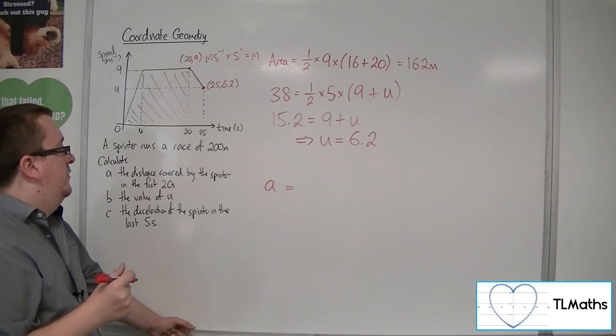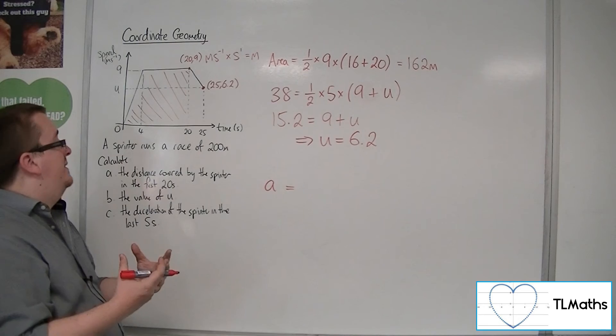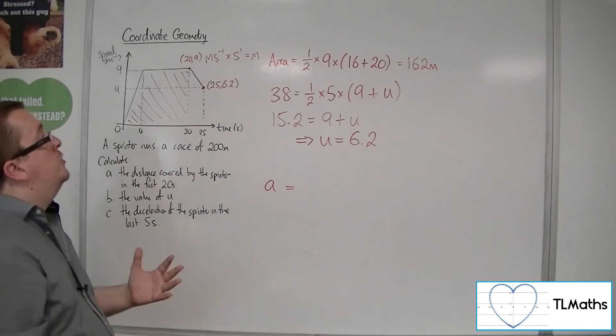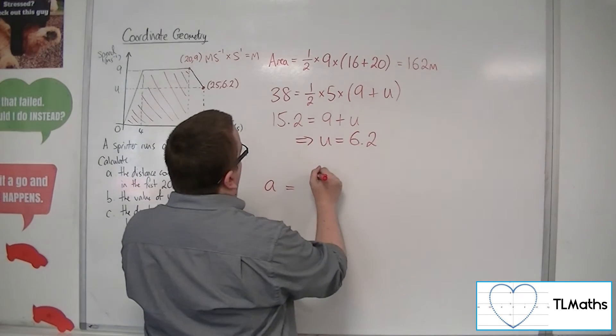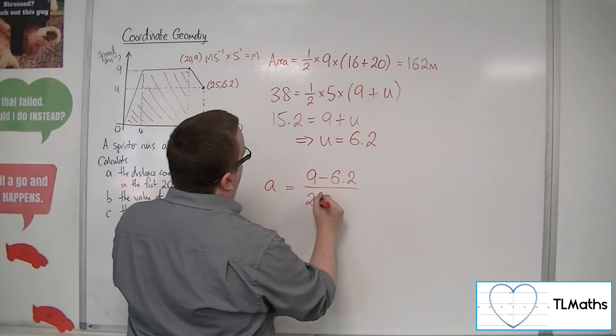Let's call it a for the acceleration, because that's what we're trying to find here. So because we're writing it as an acceleration, it should be negative, hence deceleration. So it will be the gradient of this, the difference in the y's divided by the difference in the x's.